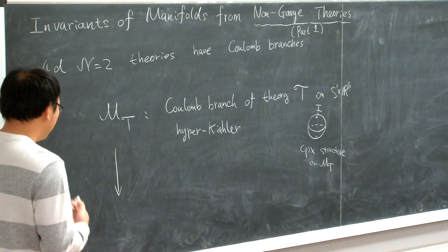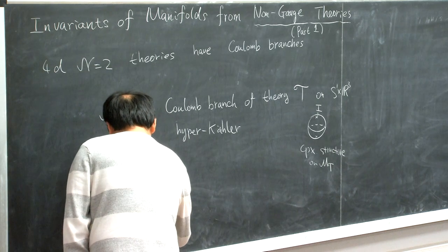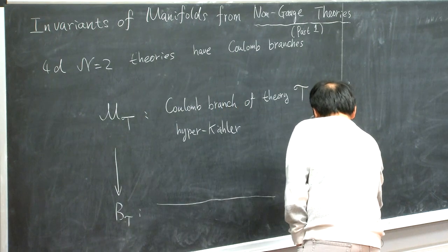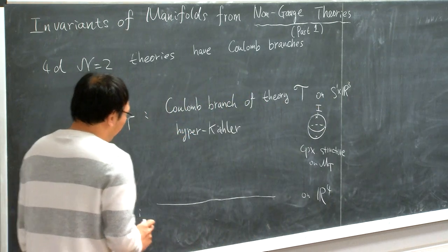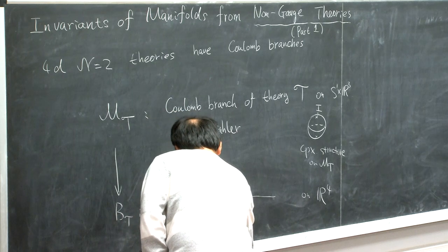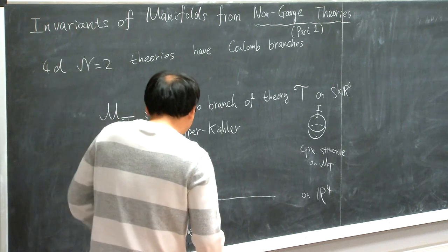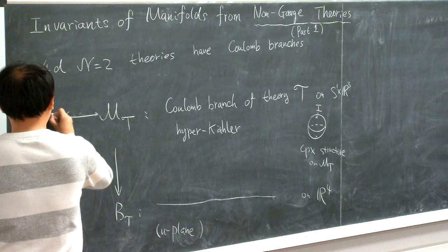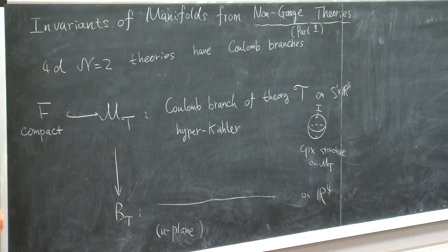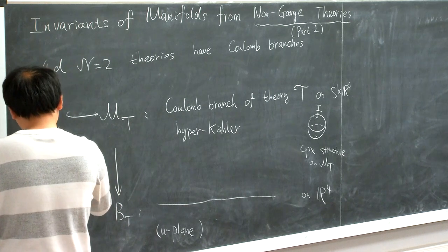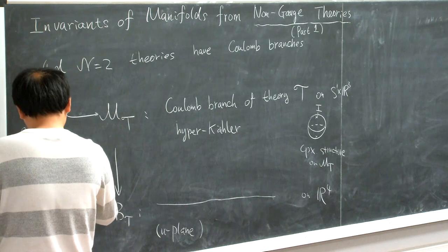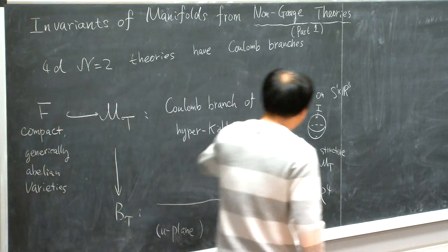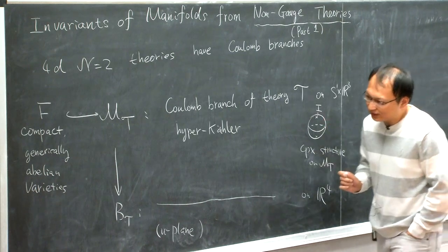For this lecture and the next, we'll be actually focusing on complex structure I. In complex structure I, M_T is still going to be a complete integrable system, and the base will be denoted by B_T. This will be the Coulomb branch of the theory on R^4, and this is sometimes also referred to as the U-plane — you have already heard a lot about it.